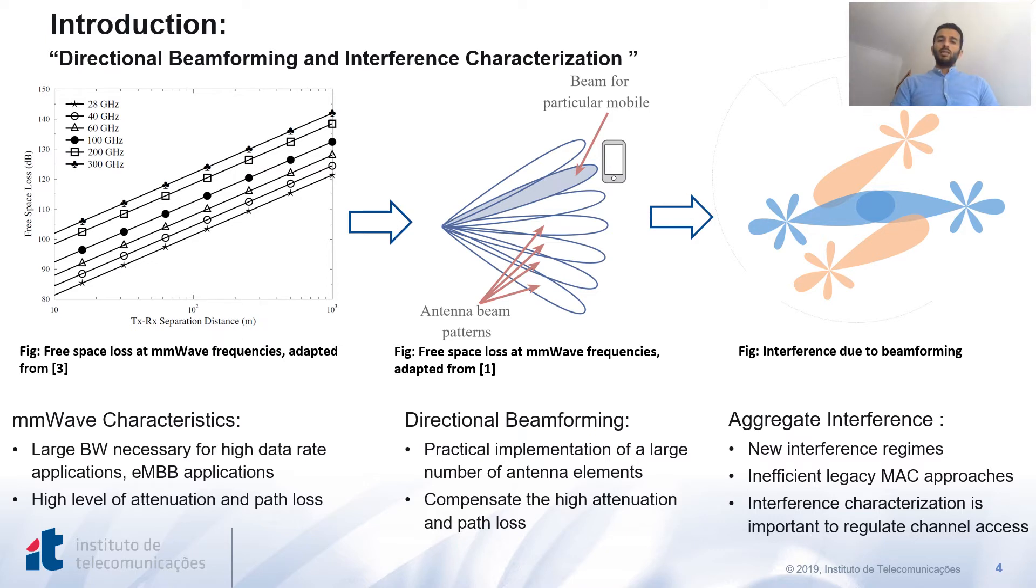However, the signal at these high frequencies suffers from high level of attenuation and path losses. On the other hand, the beamforming technology has an advantage in overcoming or compensating the imposed losses at millimeter wave bands, making it an essential choice at high frequencies.